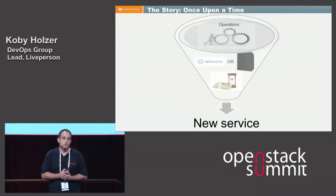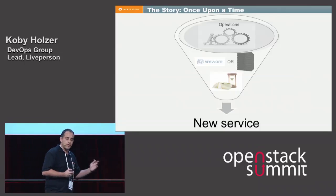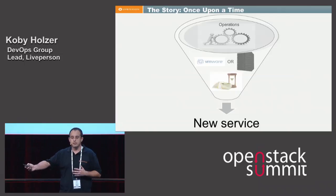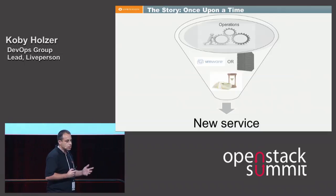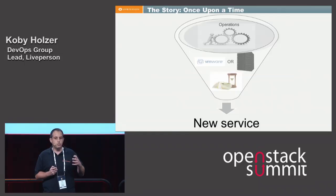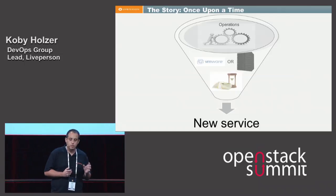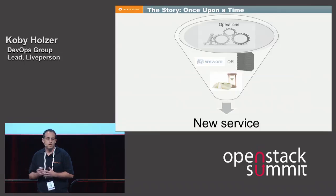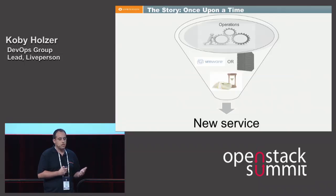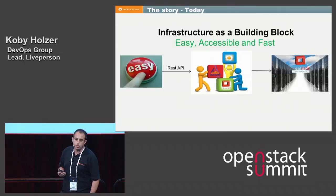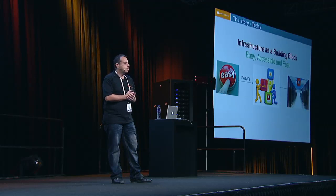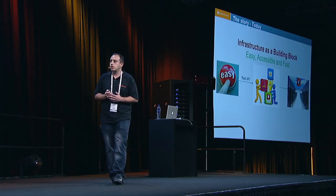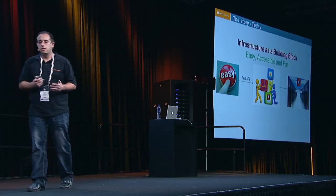Before we started with OpenStack, if we wanted to deploy a new service, we needed our operations team to work with VMware or physical servers — it took a lot of time and money. It's not that VMware is a bad solution, but when we knew we wanted to go as virtualized as possible, we had a very small VMware footprint. Looking at our minimum requirements and the fact that we had many physical servers already in place, OpenStack was the best cost-efficient option. Today, we've managed to bring our infrastructure to become a building block — using REST API scripts, Puppet, and OpenStack, we can build a cloud of services in a matter of minutes or even seconds.